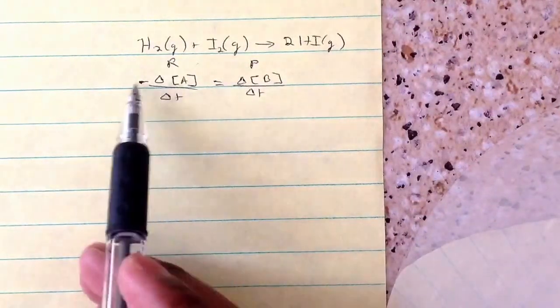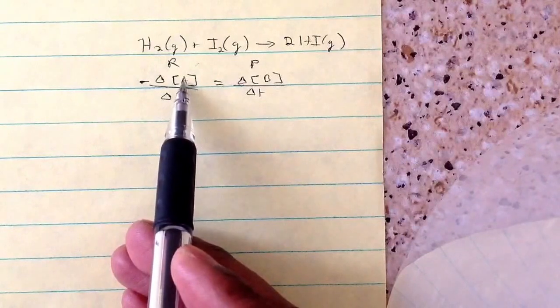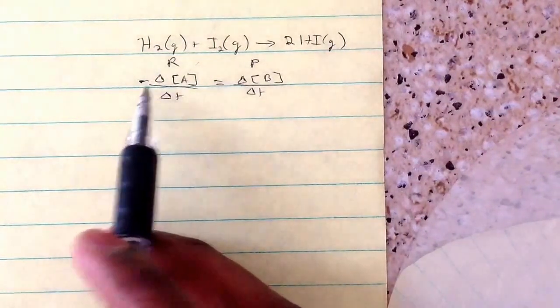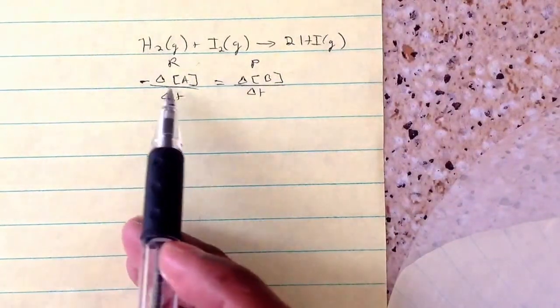This is just because since reactants are decreasing, the change means final minus initial, and the final is going to be less than the initial, so it's going to be negative.